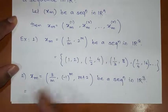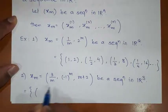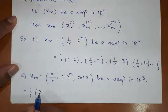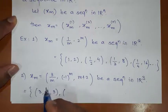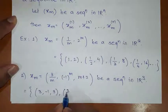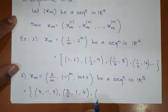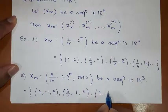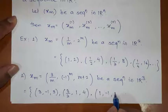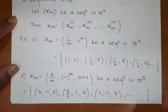Then tell me, the terms of the sequence will be: if I put m=1 everywhere, I get (3, -1, 3). That is the first element. For the second element, put m=2: (3/2, 1, 4). Now put m=3 for the third term: (1, -1, 5). In this way we will have all terms of this sequence.